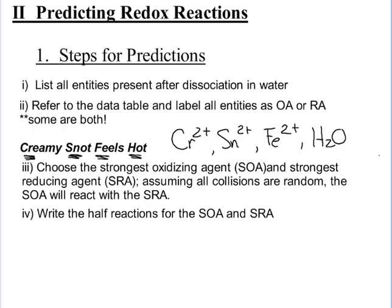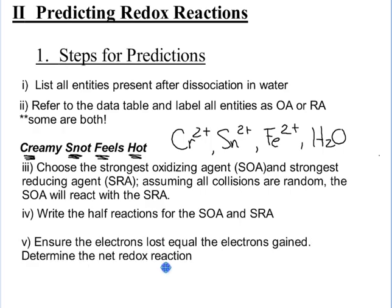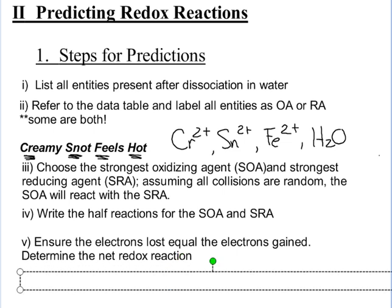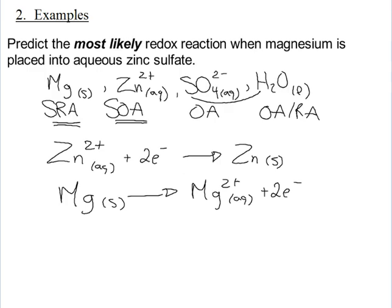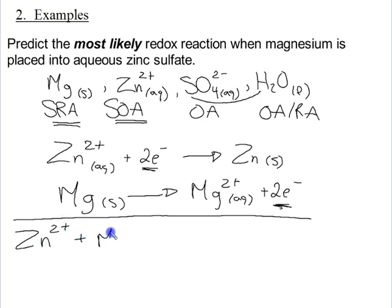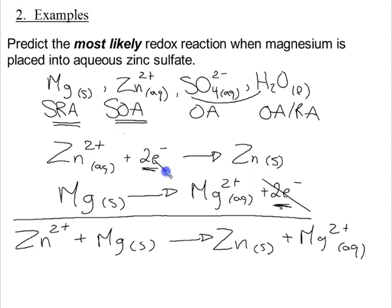Our next step in our list. We're going to ensure the electrons lost equal the electrons gained. And we're going to determine the net reaction. So in the oxidation and the reduction, we have two electrons being lost and two electrons being gained. So as it sits right now, it's all good to go. We don't have to multiply any half reaction by anything, which we will in our next example. So now I'm going to just write this as a net equation. So Zn2+, plus magnesium solid, reacts to produce Zn solid, plus Mg2+. Notice I did not put the electrons into the net equation because they're the same on both sides. They cancel. So now we have our net ionic equation.